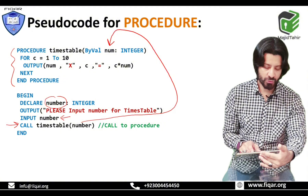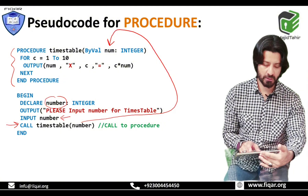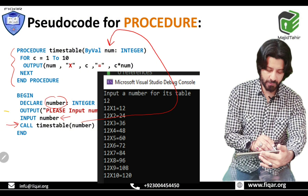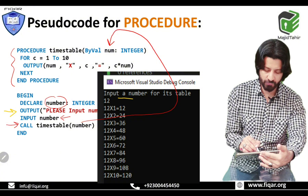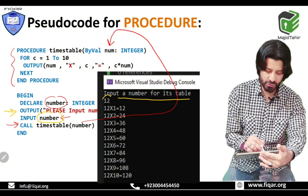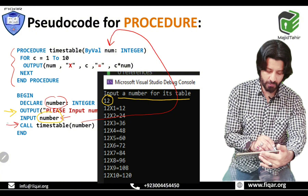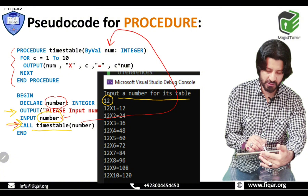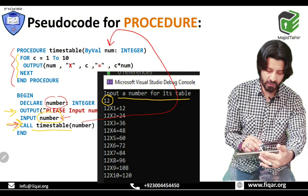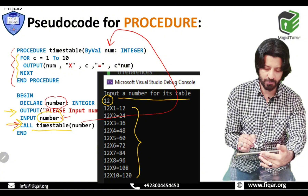When we call the procedure, the output statement asks the user to input a number for its times table. The user inputs a number — for example 12. The CALL to the procedure is made, the number is passed to the parameter, the FOR loop runs, and the table is printed up to 10 times. The program then stops. This is how the procedure works.